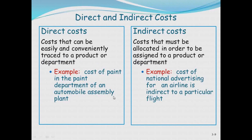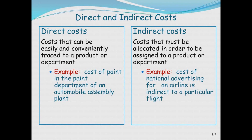Direct costs and indirect costs — we may start to get into types of costs you may not know. Direct costs are costs that can easily and conveniently be traced to a product or a department. For example, the cost of paint put on a car: you know how much paint you had before and after, so you can identify the exact amount used. That would be a direct cost in car manufacturing.